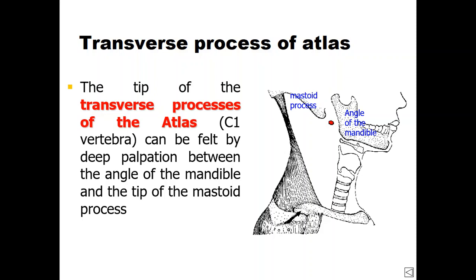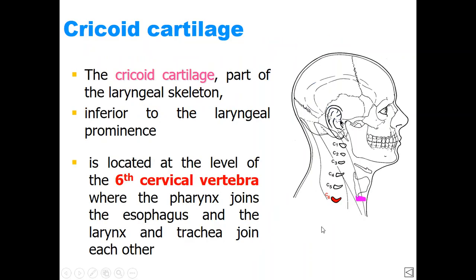Continuing with surface anatomy of the neck: the transverse process of C1, the atlas, can be felt in the space between the tip of the mastoid process and the angle of the mandible, where the parotid gland is located. Another skeletal structure forming the skeleton of the neck is the cricoid cartilage. This cartilage is an important part of the laryngeal skeleton, located below the level of the thyroid cartilage and at the level of C6 vertebra.